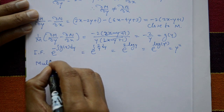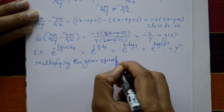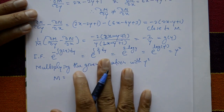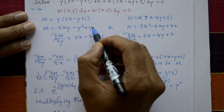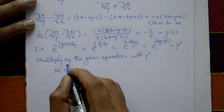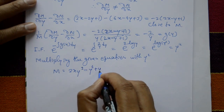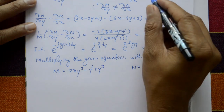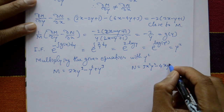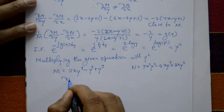Multiply the given equation by y². The new M becomes y² × (2xy - y² + y) = 2xy³ - y⁴ + y³, and the new N becomes y² × (3x² - 4xy + 3x) = 3x²y² - 4xy³ + 3xy².